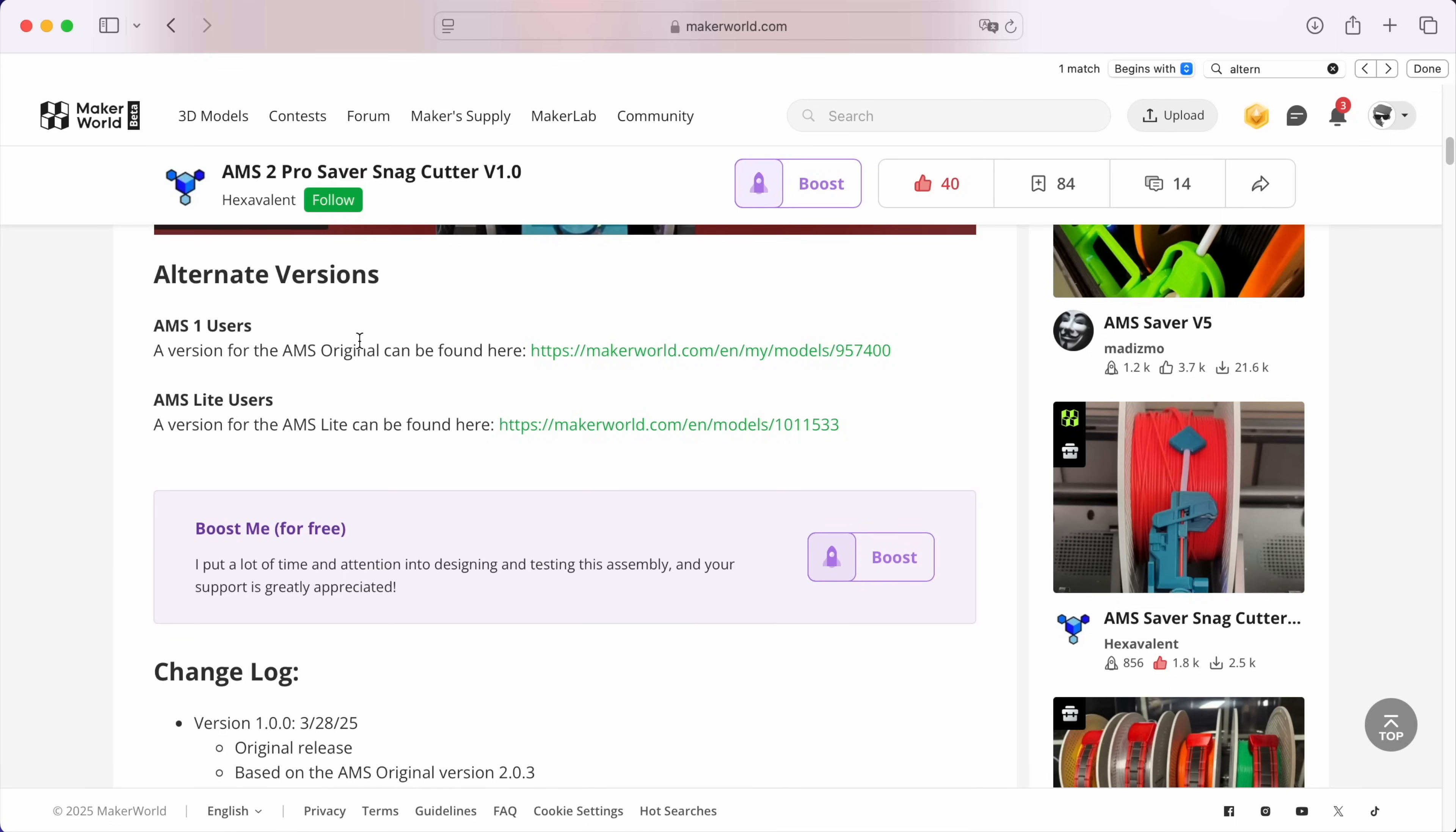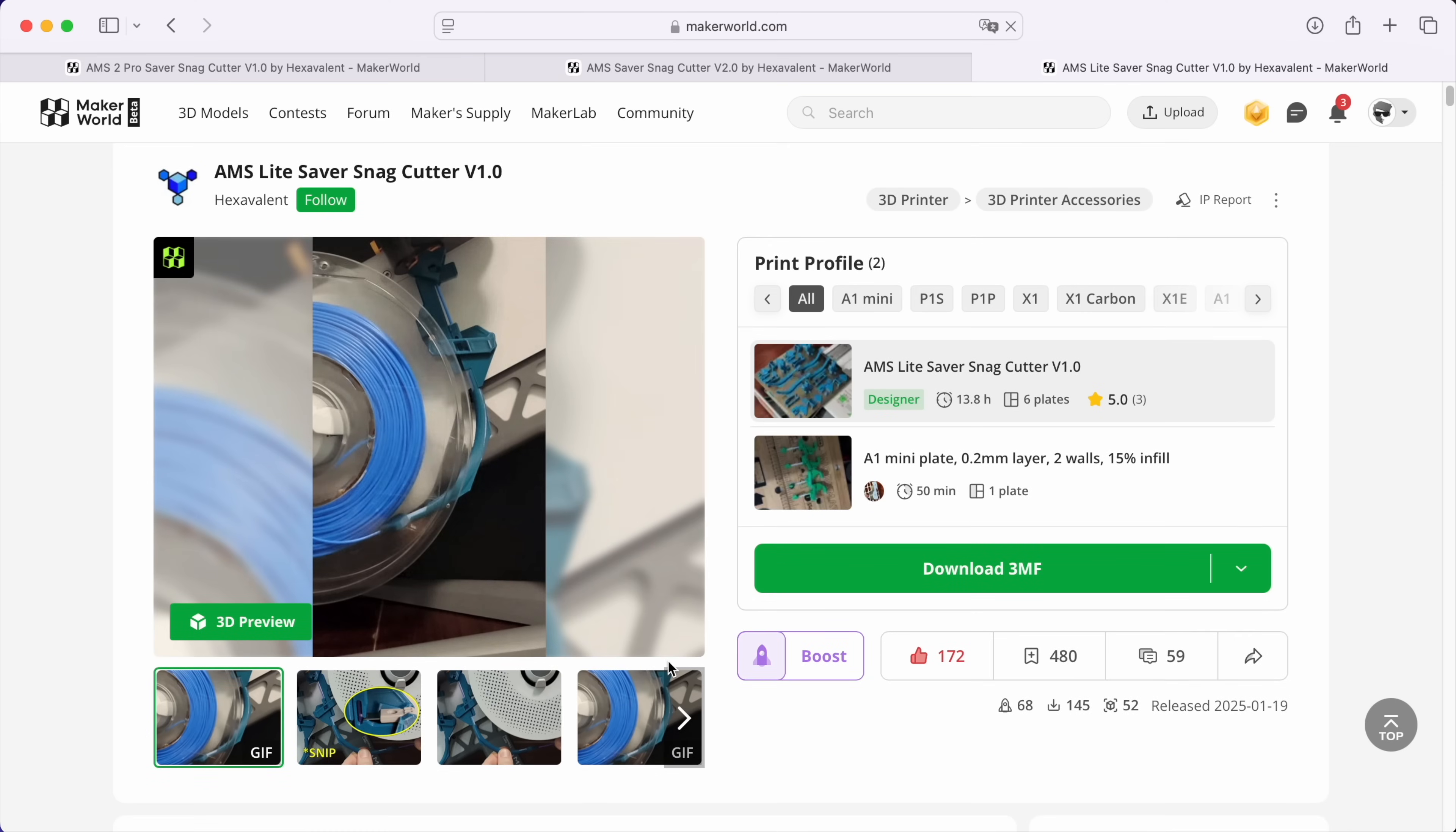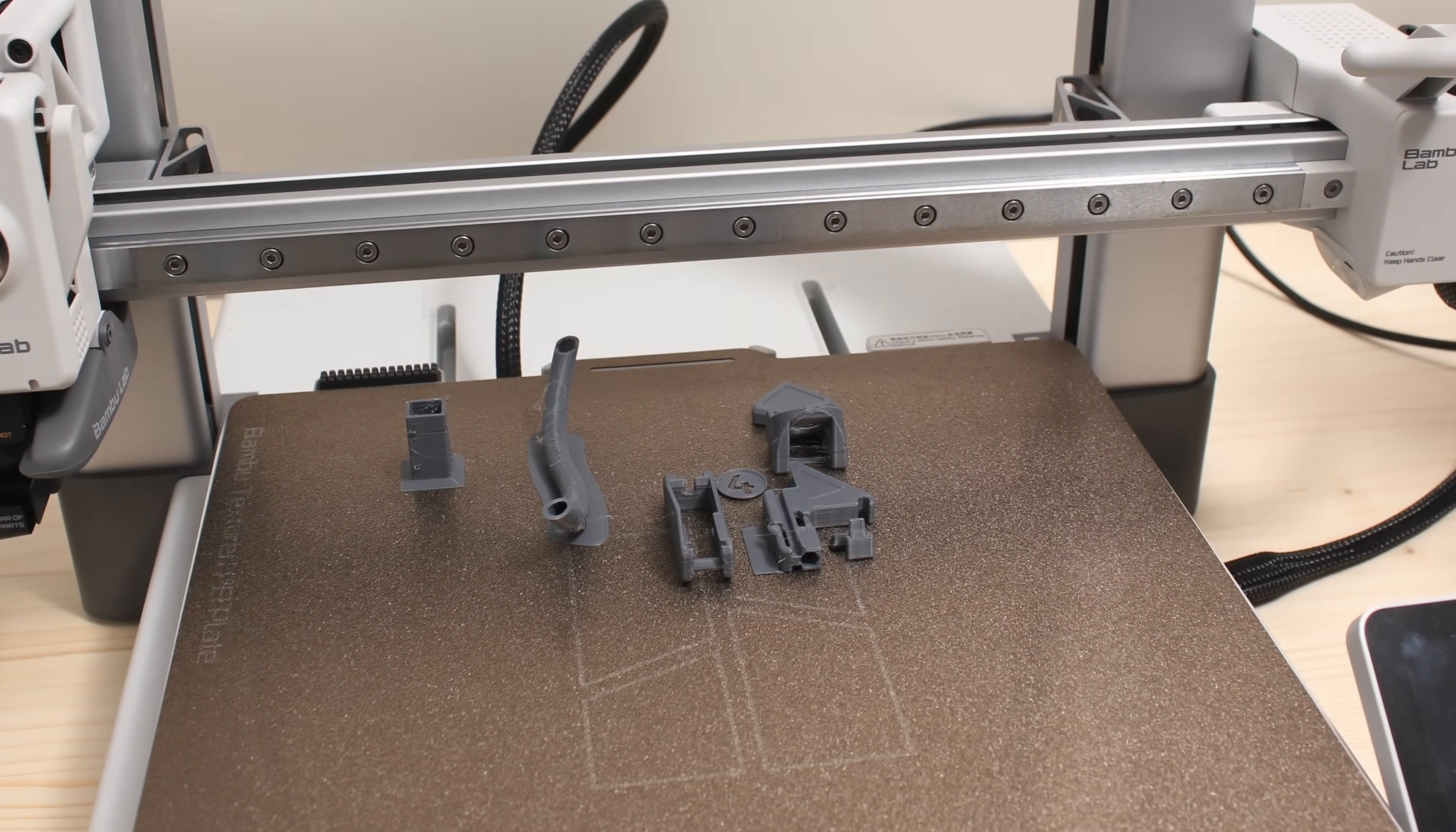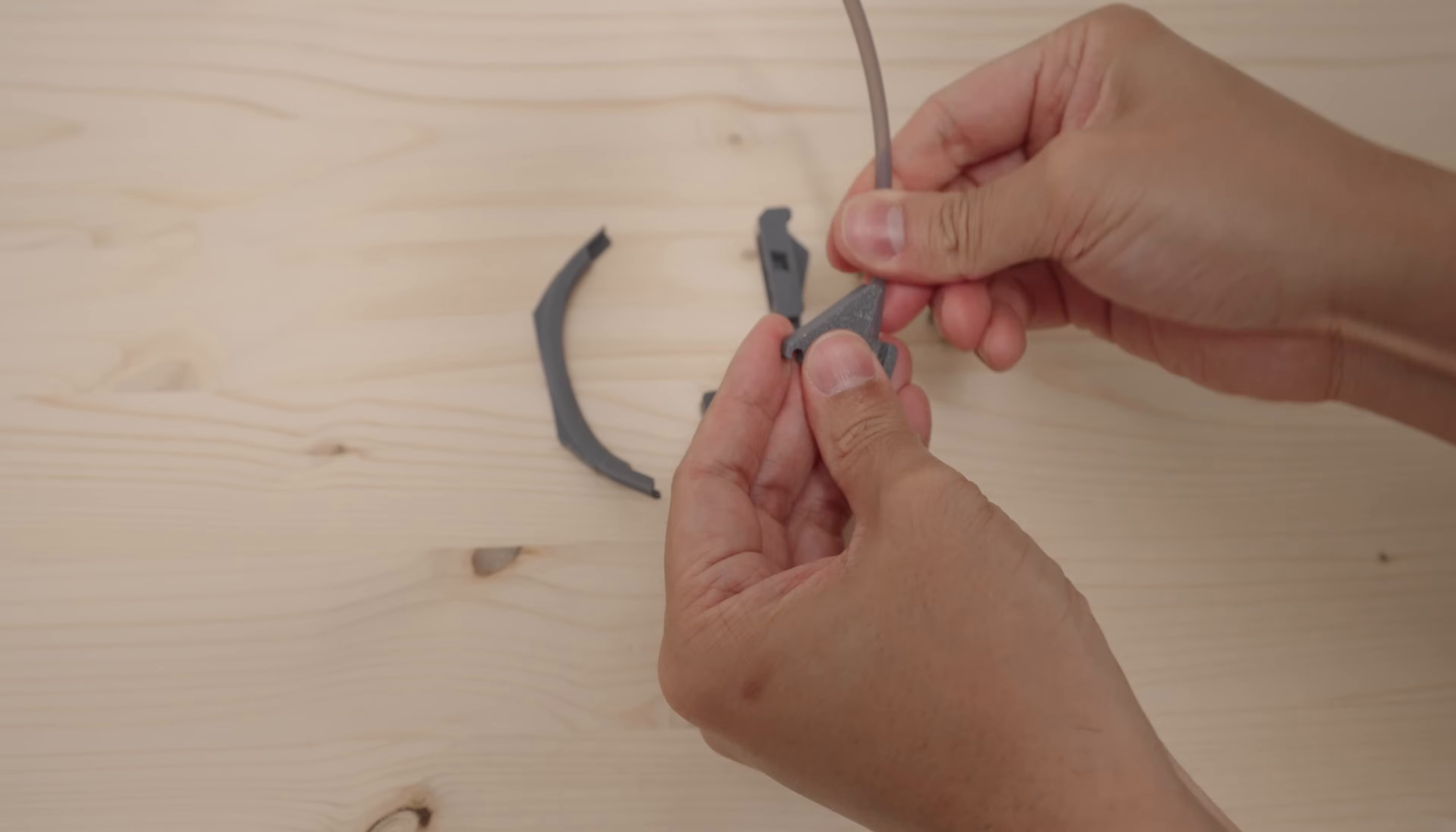Now if you don't have the AMS 2 Pro don't worry the designer also made the snack cutter for the standard AMS as well as for the AMS Lite. The principle is the same and you can see that they all have similar working parts. Of course the design of the snack cutter for the AMS Lite is slightly different due to the build of the AMS itself. So I took the chance to print the snack cutter for the AMS Lite so I could test it real quick.